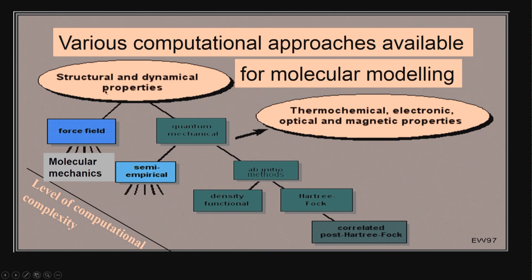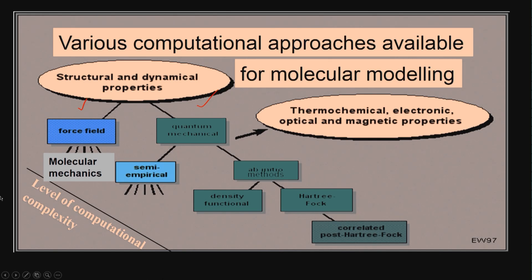There are different computational approaches for molecular modelling. One is called the force field based approach and the other is called the quantum mechanics approach. The force field based approach is the easiest one — it does not require too many computer resources — but we can get only some set of parameters: structural properties like the 3-dimensional structure, the shape of the molecule, and the diffusion coefficient. The tools used here are molecular mechanics tools. In the quantum mechanics based approach, we can look at energy required to break a bond, form a bond, thermochemical calculations, electronic calculations, and optical calculations.